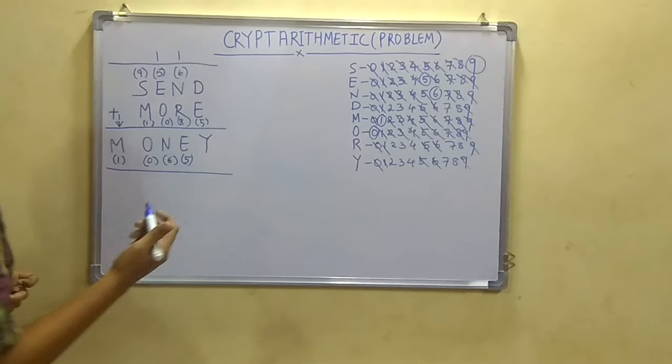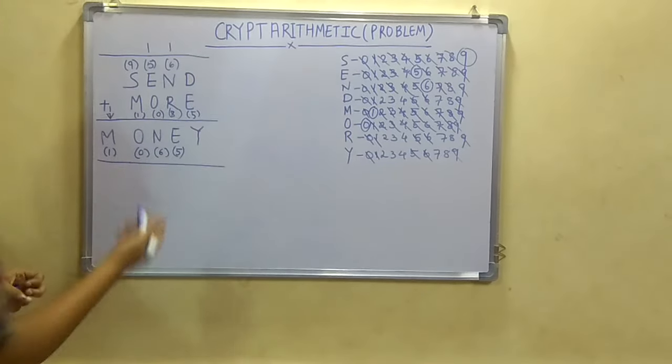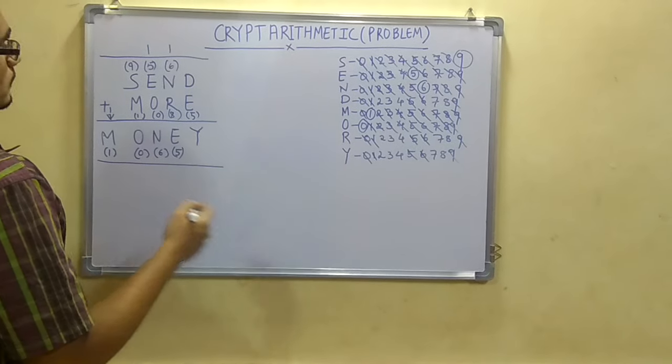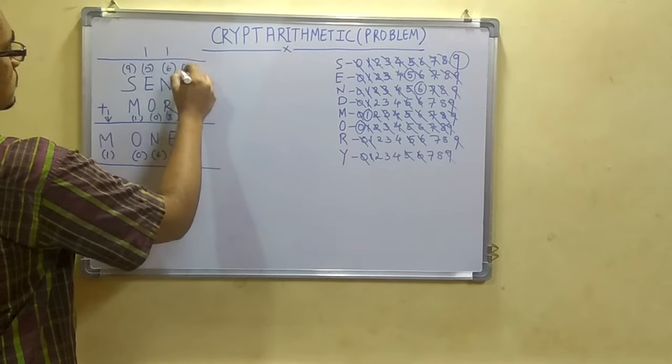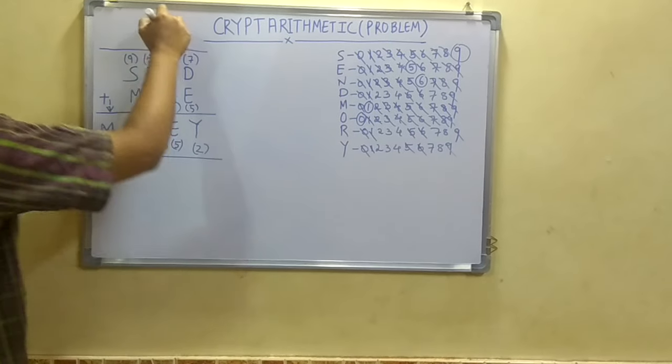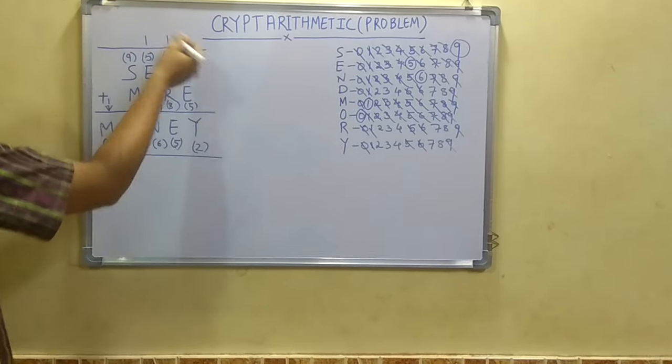You cannot assign same digit. Or you cannot assign 9 because 9 already has been taken by S. So left out is 7. That is possible. That is 7 plus 5 is 12. So 2 should come here. And 1 is a carry here. 6 plus 1 is 7.